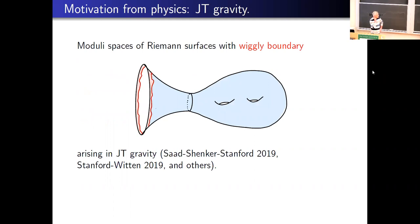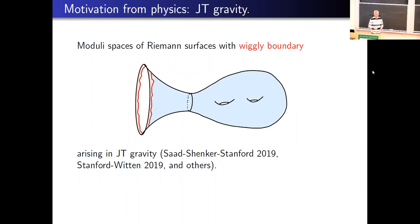Anton asked me to look at papers by physicists on JT gravity — work of Saad, Schenker, Stanford, Witten, and others. JT stands for Jackiw-Teitelboim. Looking at those papers, to be honest I didn't really understand anything at all, but they have nice pictures and you get a bit of the message. They're looking at moduli spaces of Riemann surfaces with boundary — because there's a boundary and a hyperbolic metric, these surfaces develop what physicists call trumpet ends, and mathematicians often call funnels.